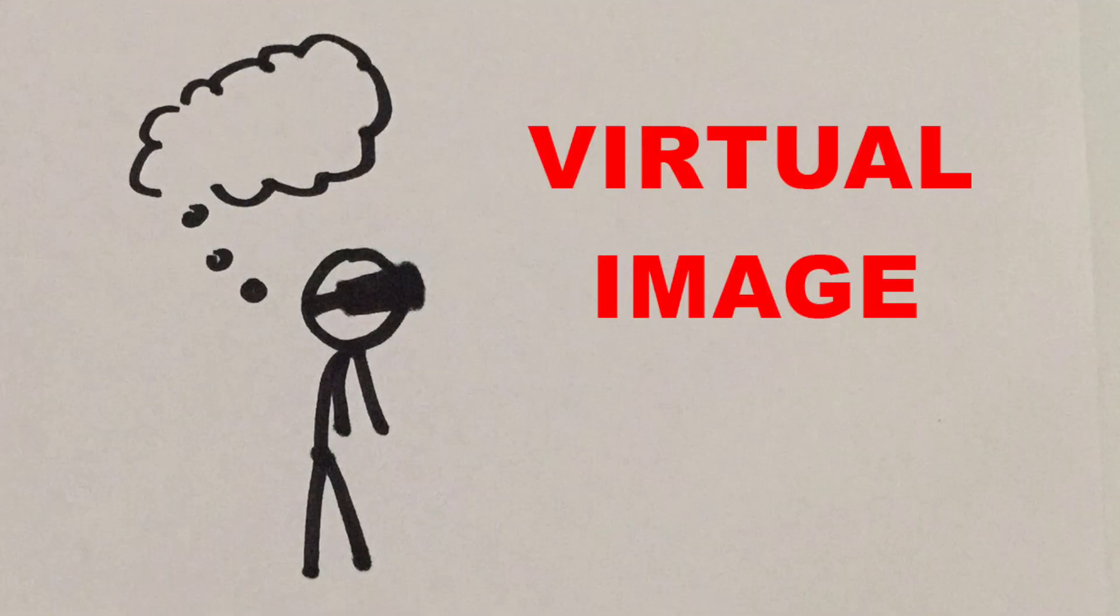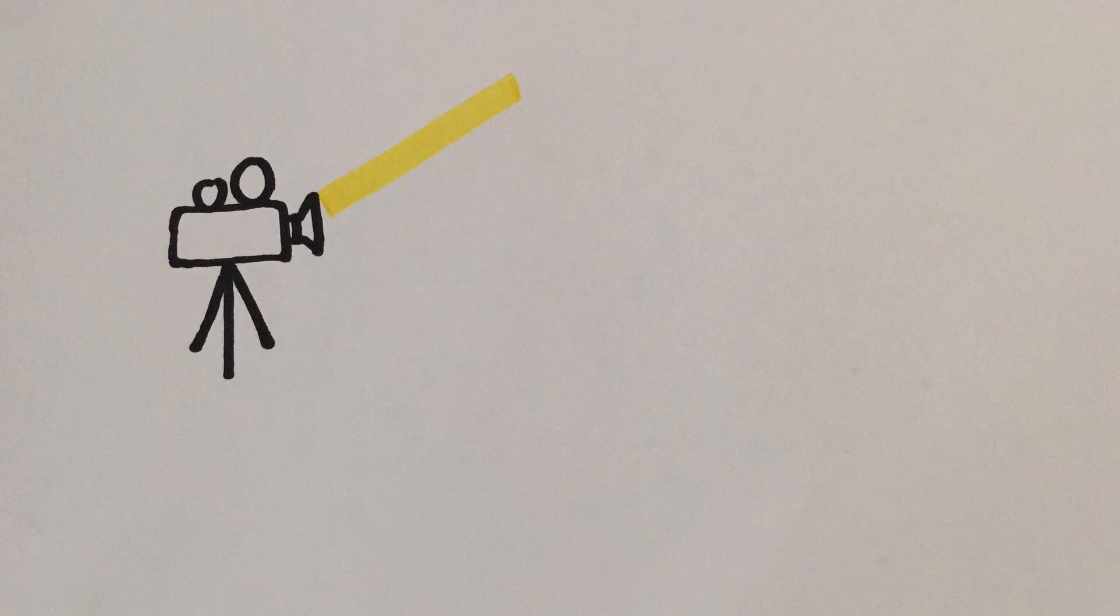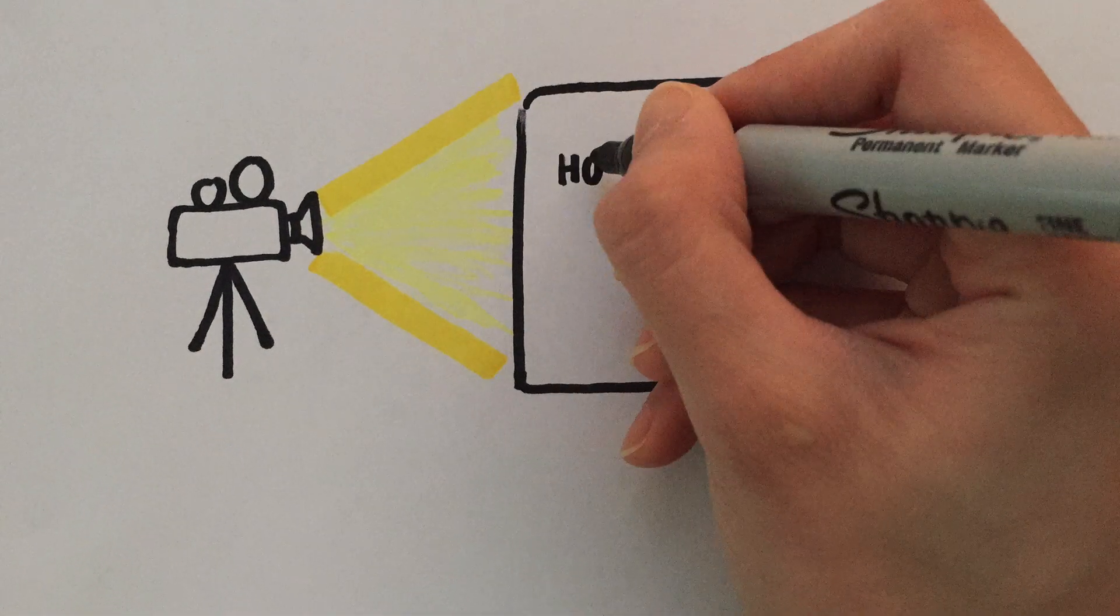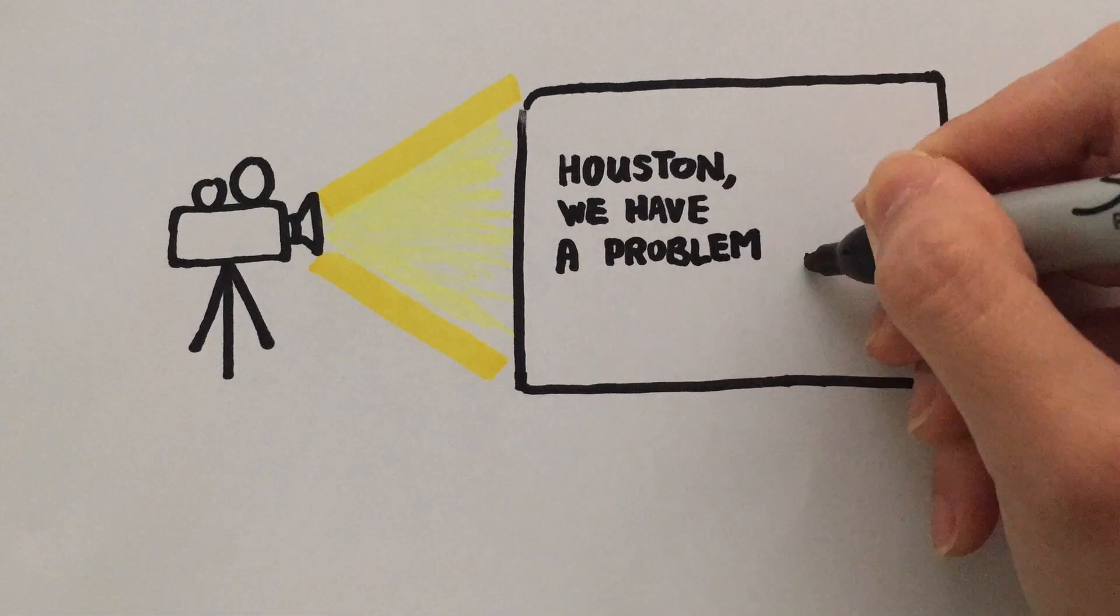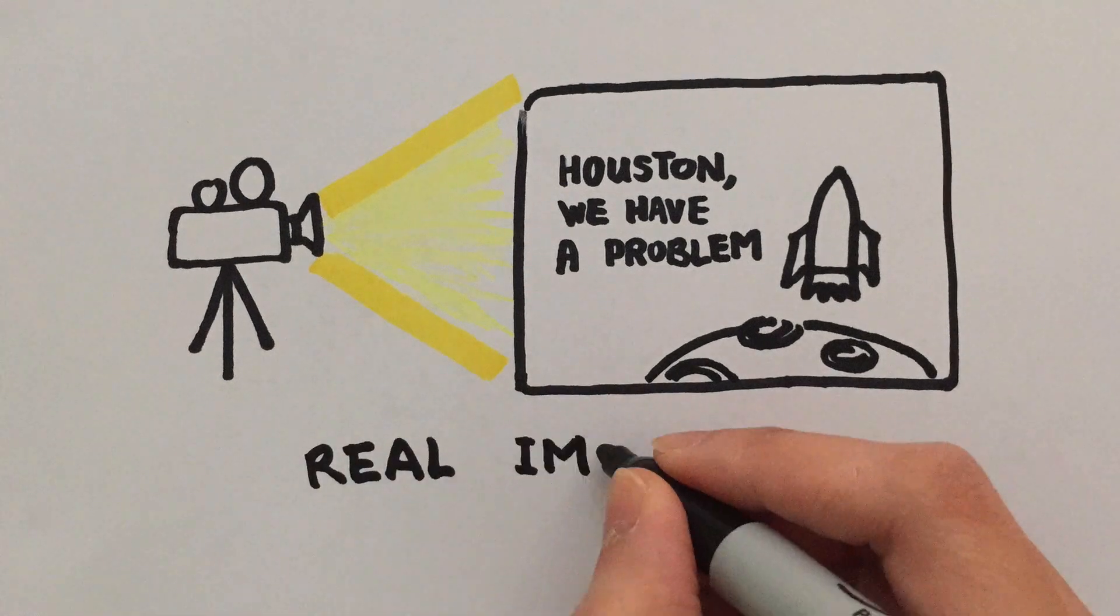Physicists call this image a virtual image because there's no way we can gather the rays from this virtual image and project it onto a screen. Contrarily, the image you see on the cinema screen is a real image because it comes from a projector and can be projected onto a screen.